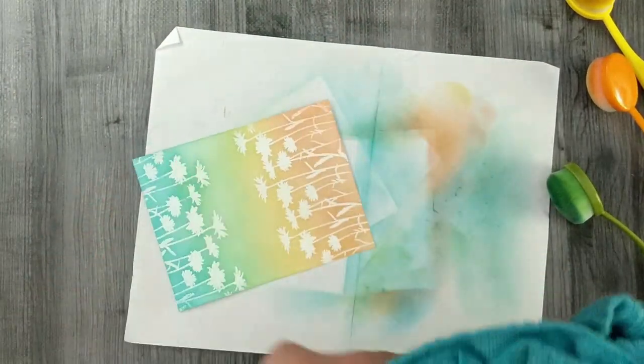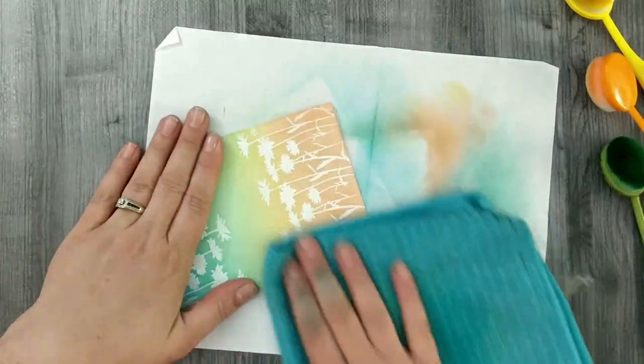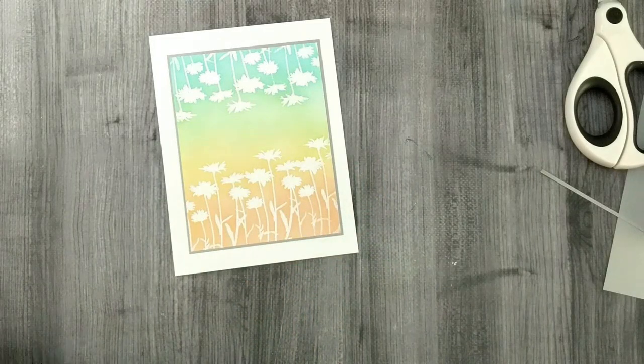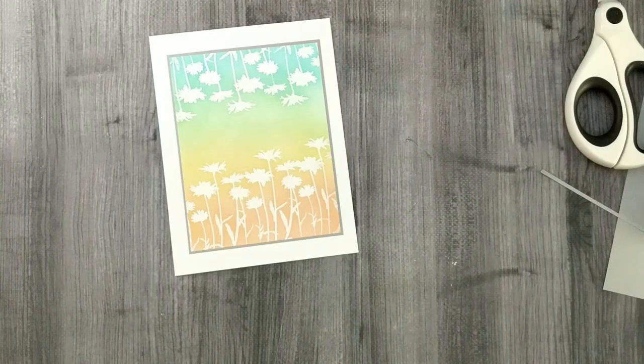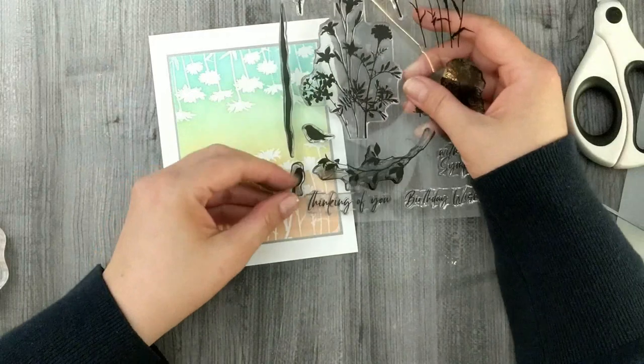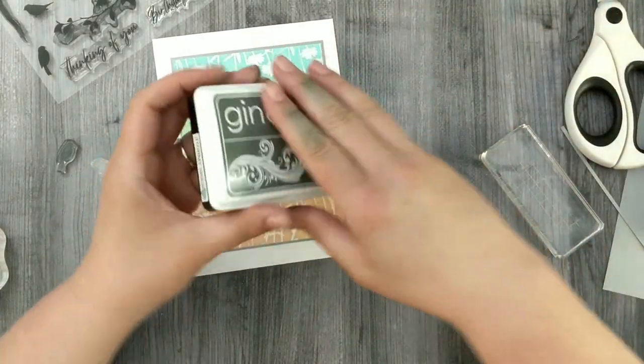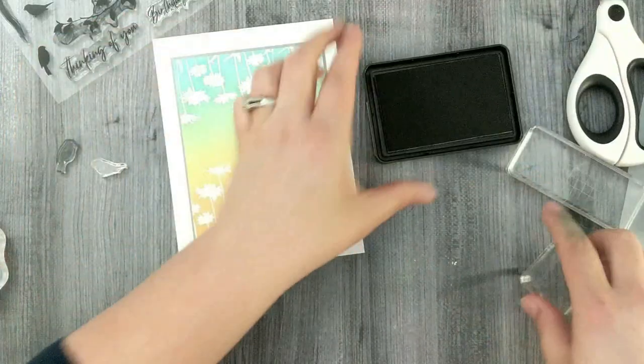Once I'm happy with the ink blending, I'm going to wipe off the embossed image to make sure that no ink is sitting on top. Then I'm going to layer this onto a gray piece of cardstock for a background panel. Then I adhere that to a white card base. Then I thought I'm just going to add in a couple of those little birds sitting on those flowers.